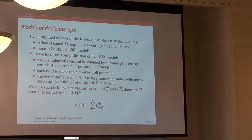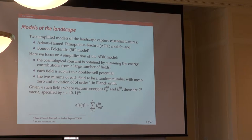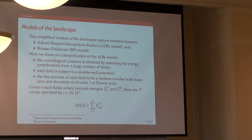When we wrote this paper we only really thought about two models, and we focused on the ADK model cited here. The Bousso-Polchinski model was mentioned quite a bit by Professor Douglas. In the model we're going to look at, the cosmological constant is realized by summing together a variety of fields. We focus on a simplification where each of these fields is similar to a double well potential, with energy gaps between the two wells on the order of a Planck unit.